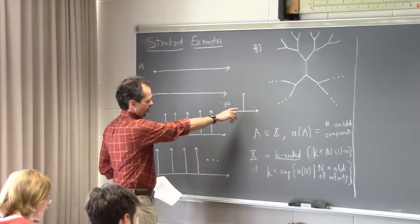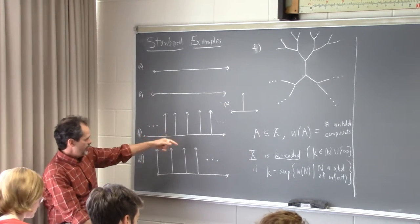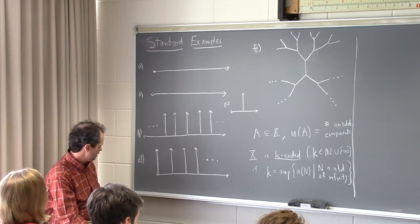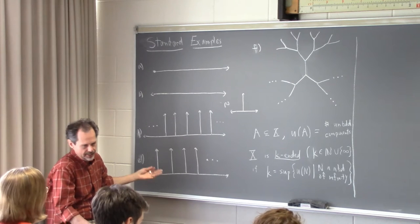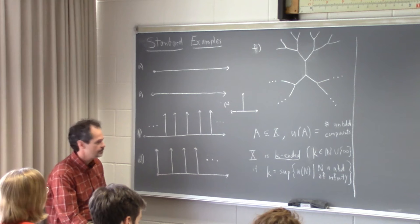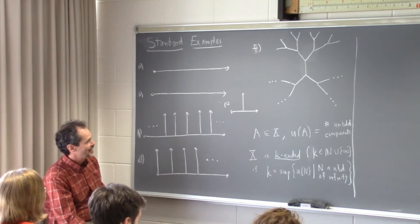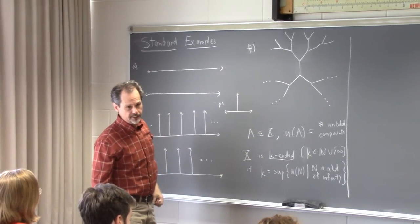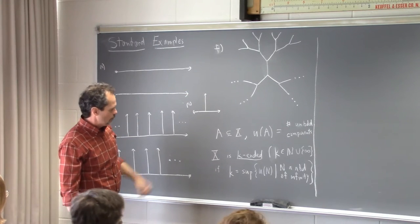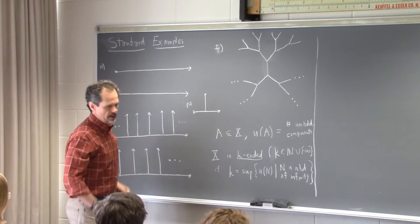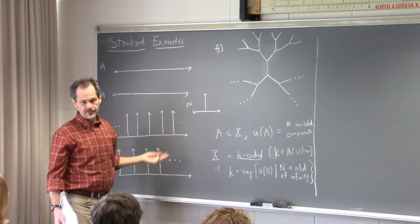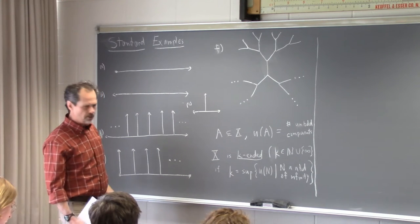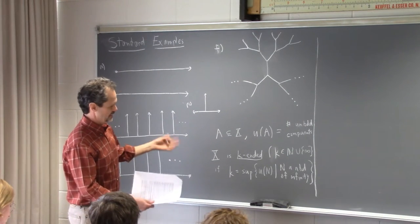Instead of attaching just one half line, I attached a half line at every single integer. And then there was T3 — the tree of index three at each vertex. Notice that if I put vertices in, all of the objects I've drawn here are just infinite trees. Infinite trees play a useful role as the simplest models of what can happen for ends of non-compact spaces.